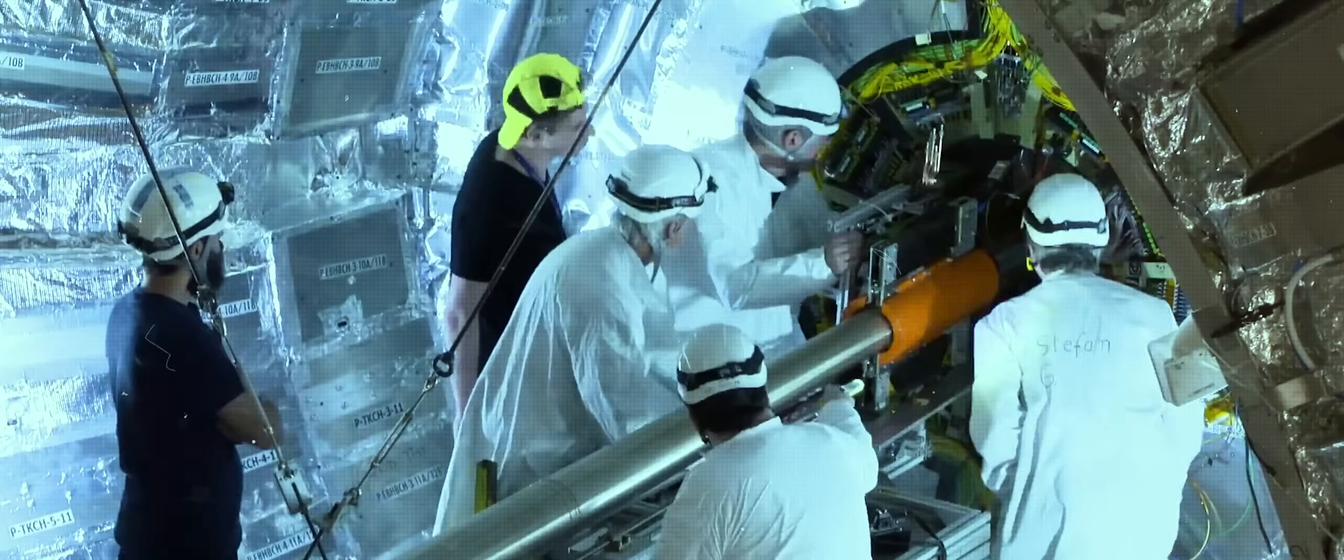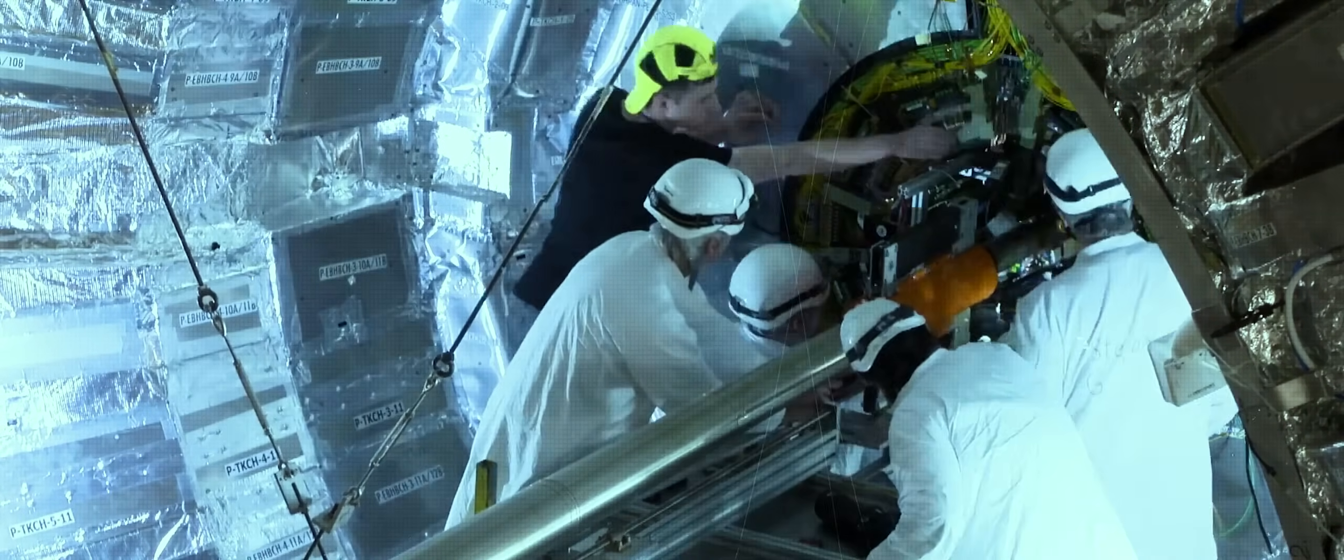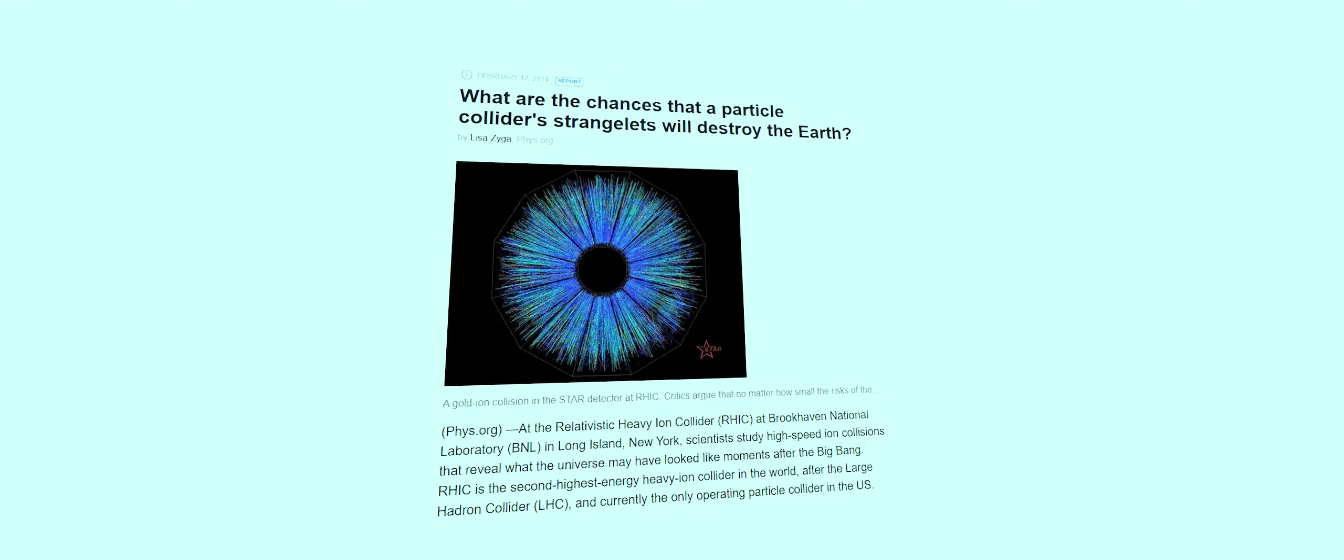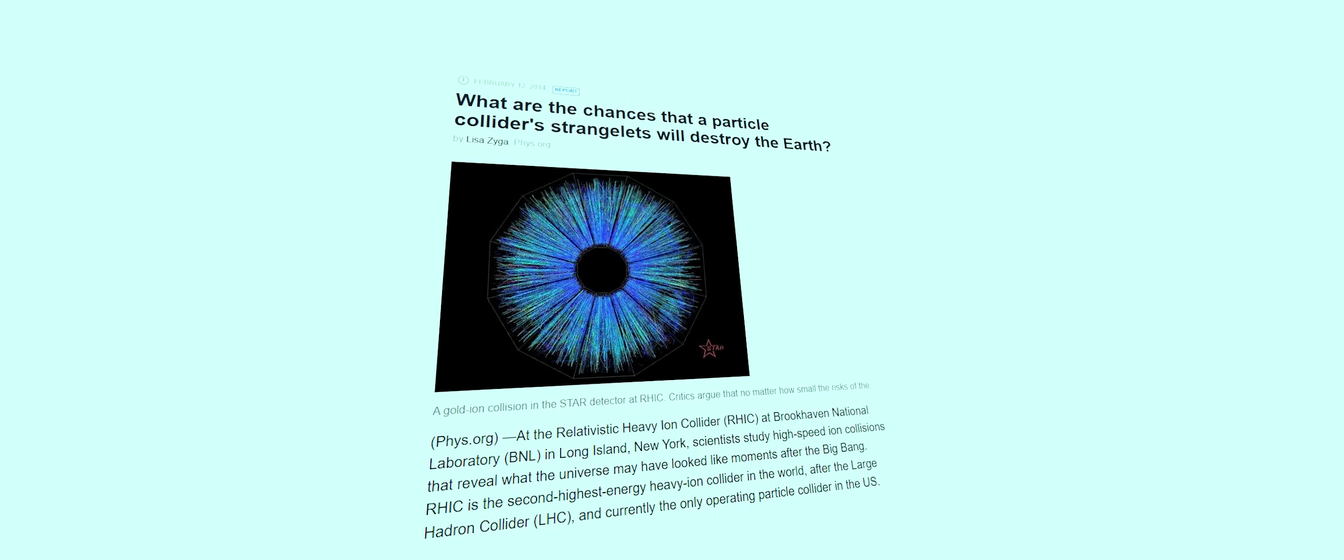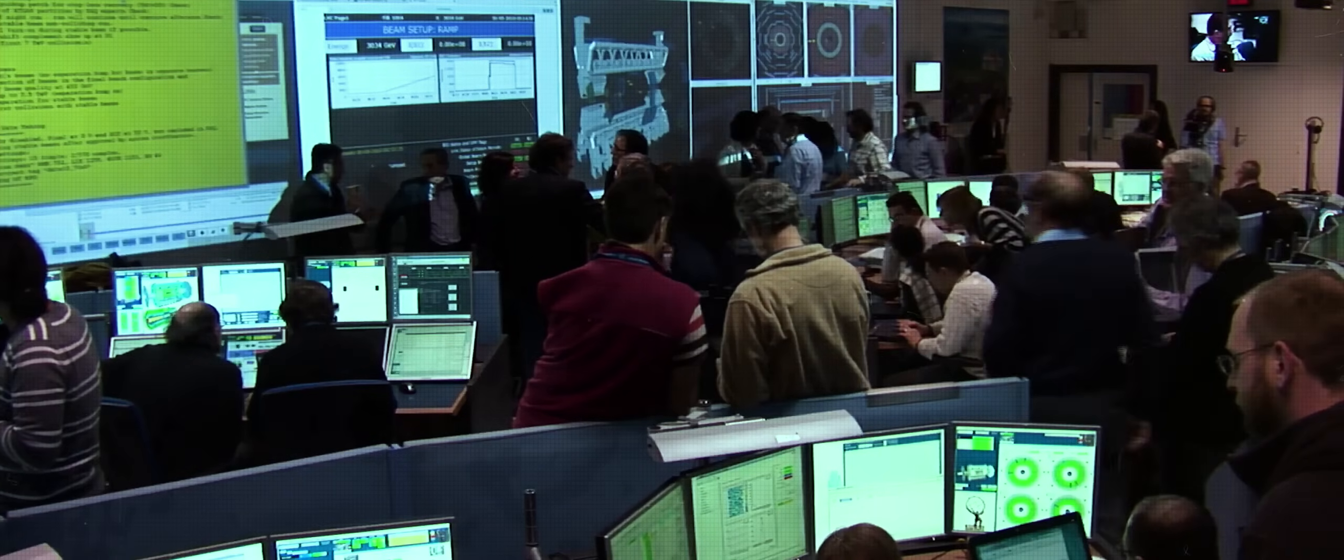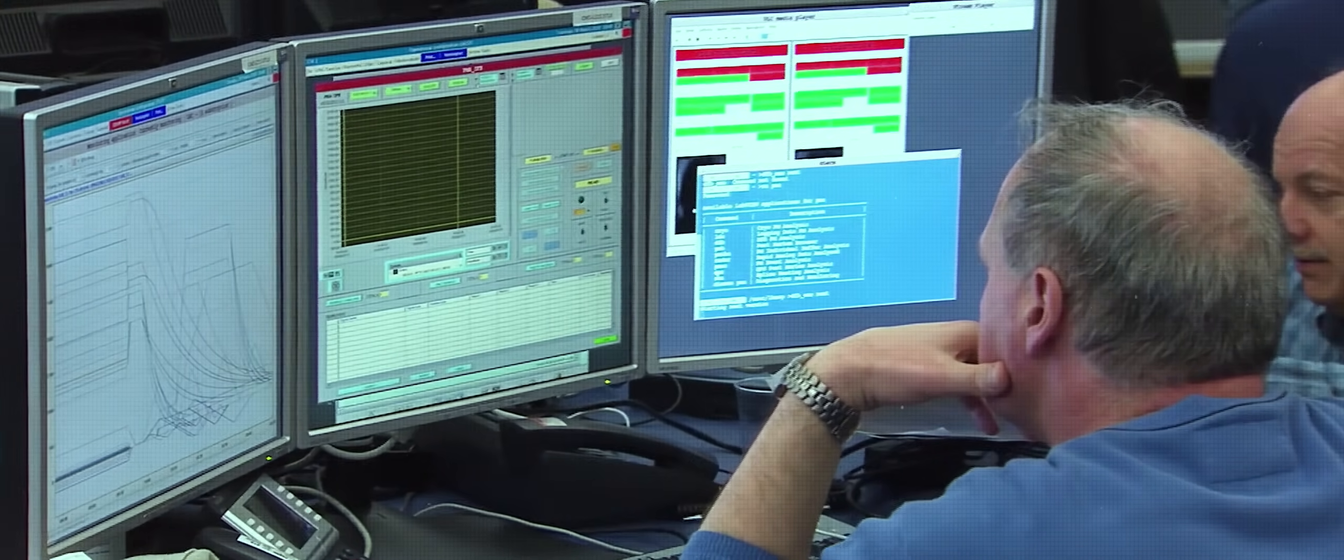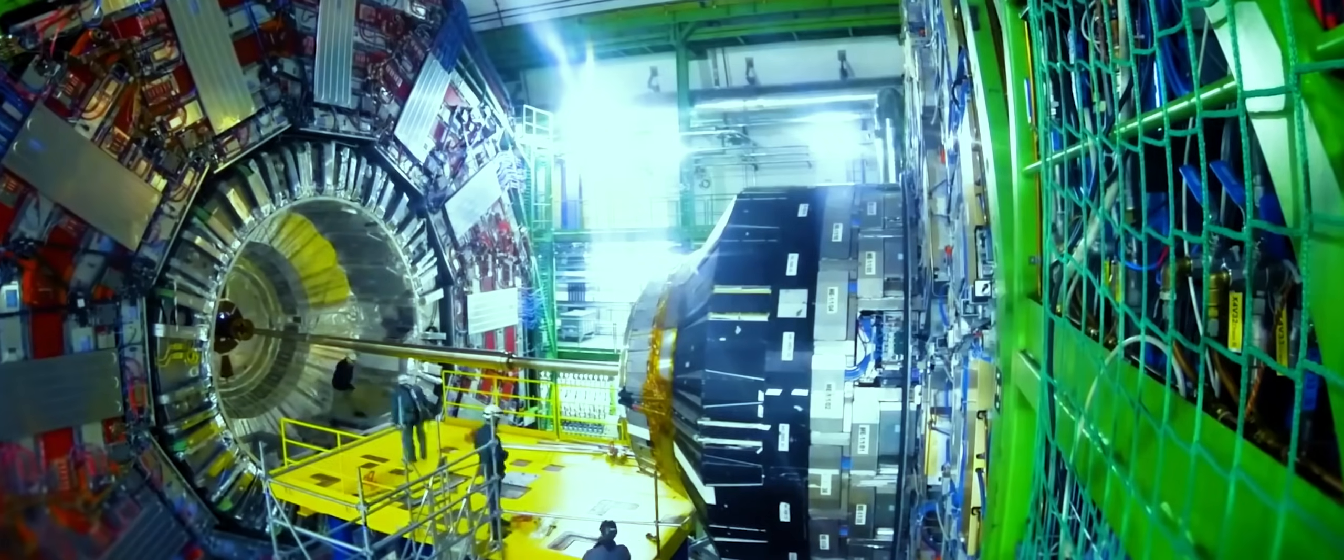One media report from the Time notes that even before the Collider opened, some people worried that it could form exotic matter that would destroy the Earth, possibly within seconds. This was not just fringe panic. This was a possibility that demanded the full attention of the scientific bodies overseeing the project. The entire project hinged on proving it was safe.